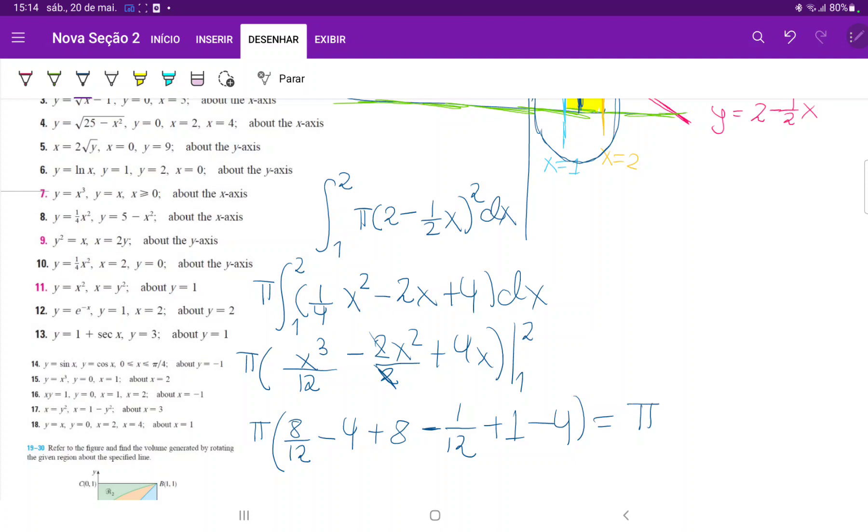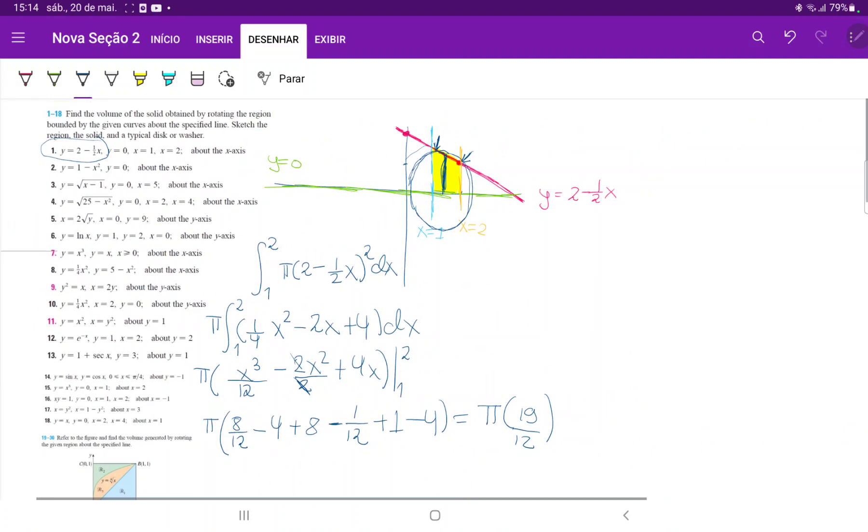So when we do our calculation, this is pi times, let's see, 8 over 12 is 2 thirds minus 4 plus 8 minus 1 over 12 plus 1 minus 4, and that actually gives us 19 over 12. So our volume is 19 pi over 12 cubic units because they don't give us the units.